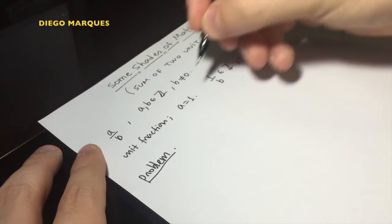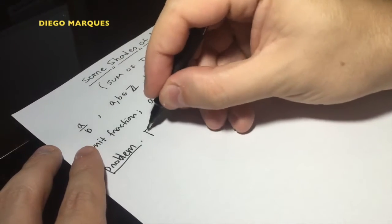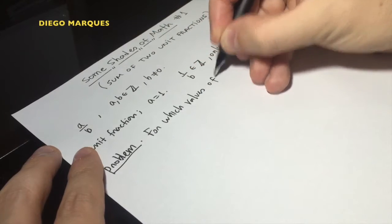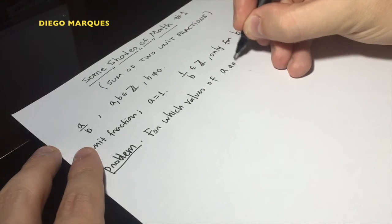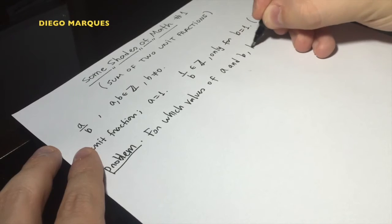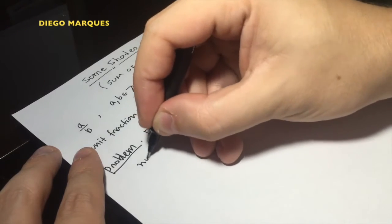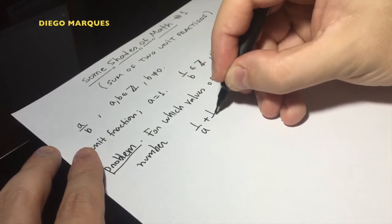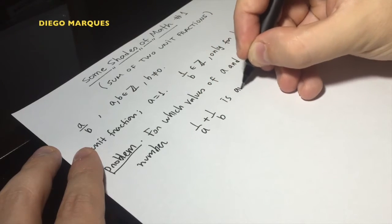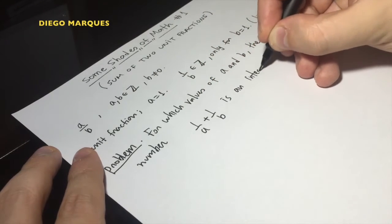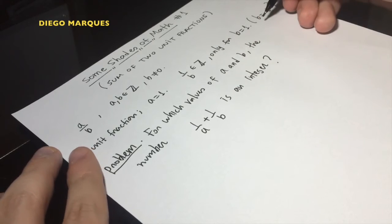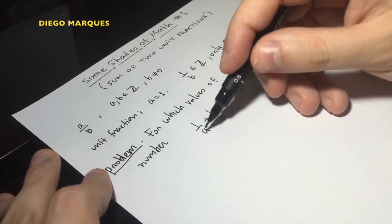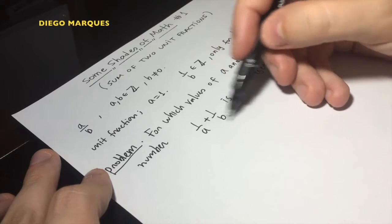So a unit fraction is a positive integer only when the denominator is equal to 1. But the problem is the following: for which values of a and b is the number 1 over a plus 1 over b an integer?